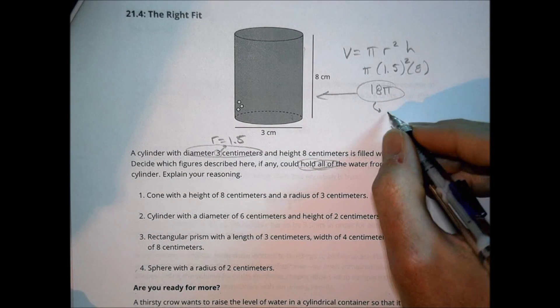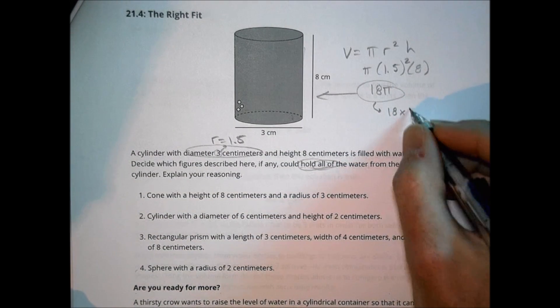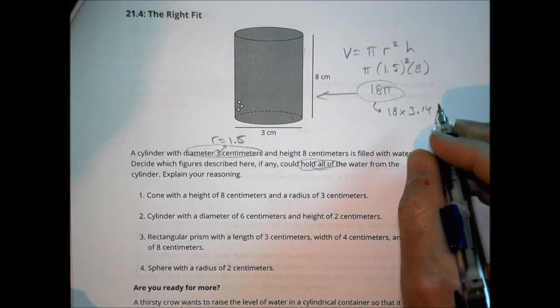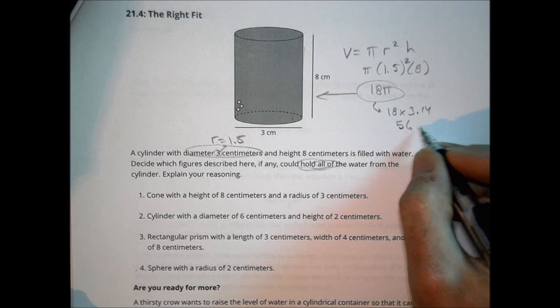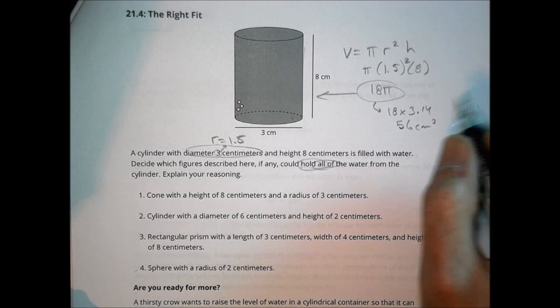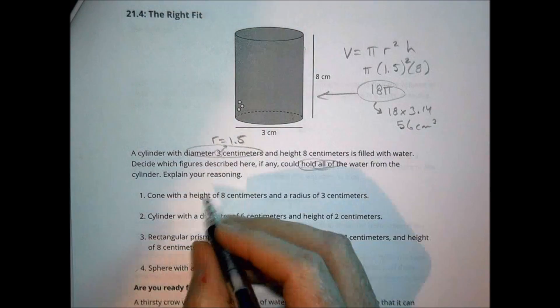So the volume of this shape is 18 pi. So as we look at these other shapes, we have to decide if they can hold all 18 pi amounts of water there. Just for the sake of, if you were wondering, this is 18 times also 3.14. So in terms of a number that would hold, it should be about 56 centimeters cubed. So if we have to get a number without pi.